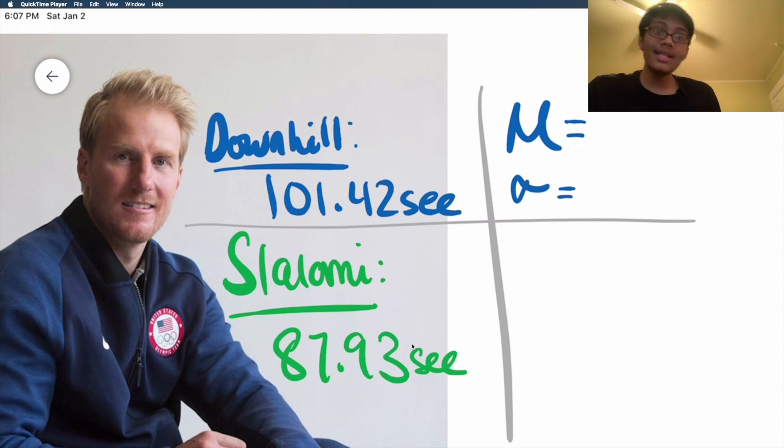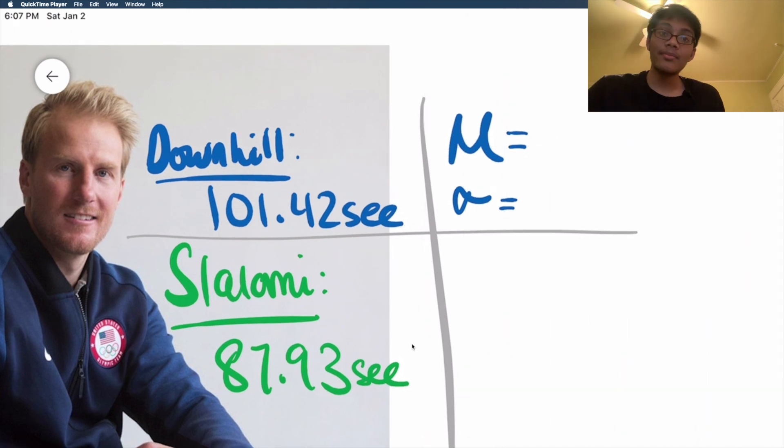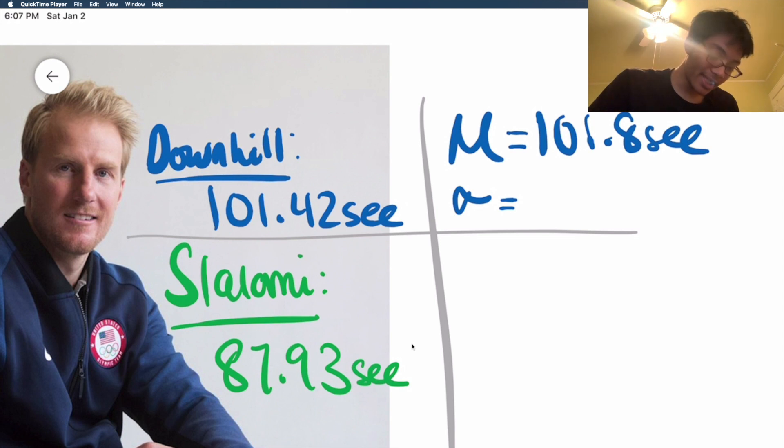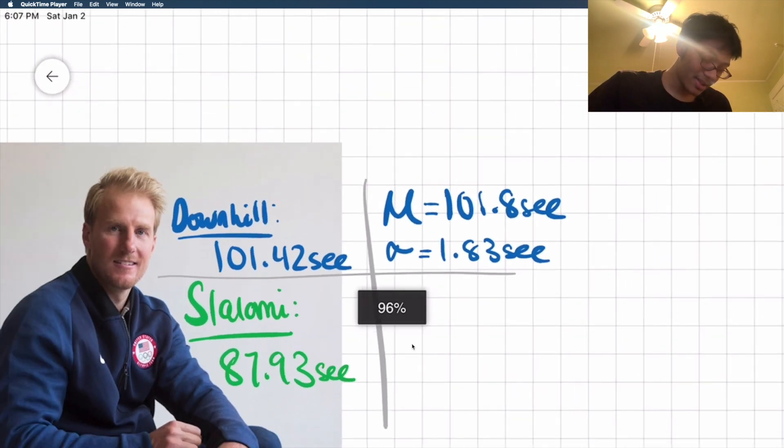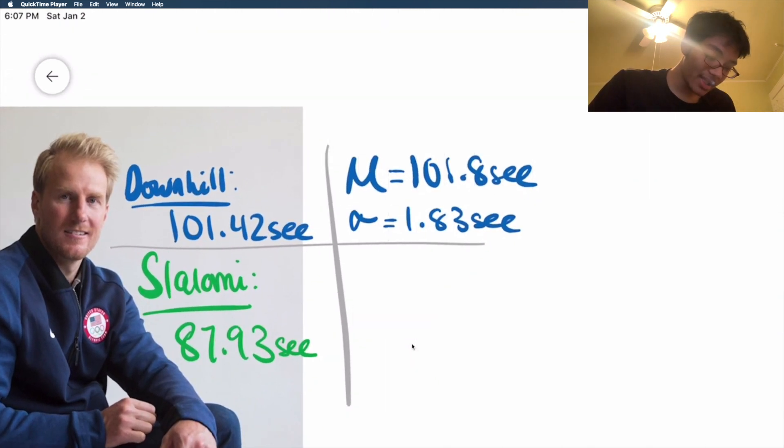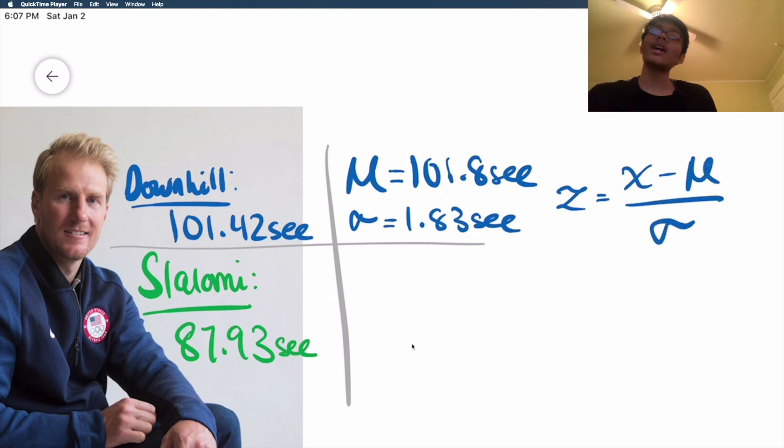What's the mean time for downhill racers? Well, the mean time for his competitors is 101.8 seconds. The standard deviation is gonna be 1.83 seconds. And so immediately, we can find out what Ted's z-score is for the downhill skiing race. Because remember, to compute the z-score, all we need is the data value, and we need to subtract the mean from it, divide by the standard deviation.